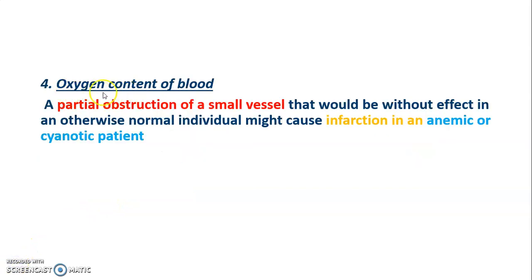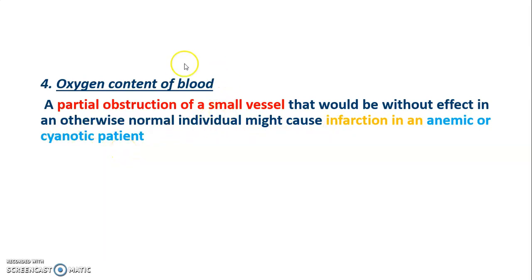The last factor is oxygen content of blood. A partial obstruction of a small vessel that would have no effect in an otherwise normal individual might cause infarction in an anemic or cyanotic patient. Thus, the oxygen content of blood is an important factor in the development of infarction.